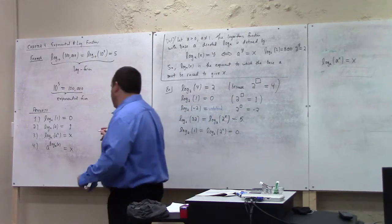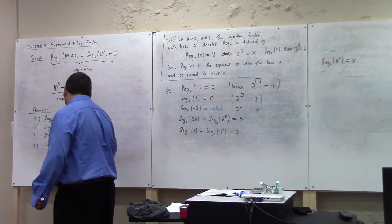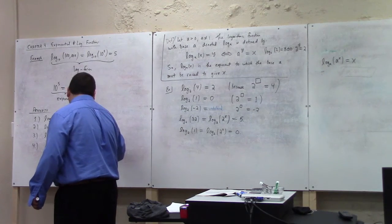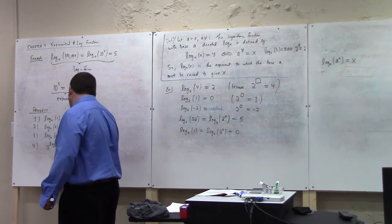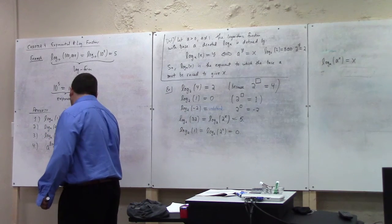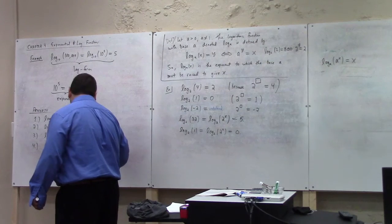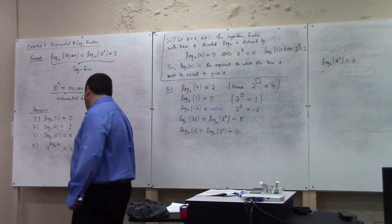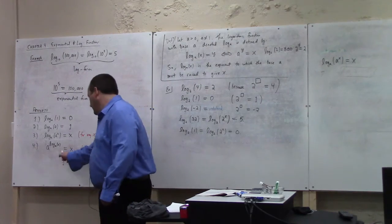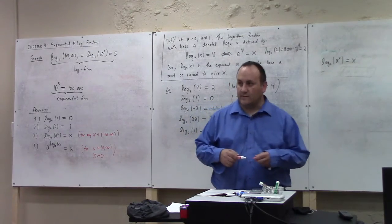So this one, 3, is for any X in the real numbers. But the number 4, this is just for X in the positive reals. Or in other words, for X greater than 0. That's the condition put on this. Because we cannot take the log base A of X unless X is positive.